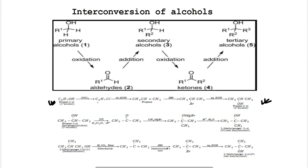Chloropropane is reacted with alcoholic KOH to form propene. Propene is then reacted with hydrobromic acid, and by Markovnikov's rule, 2-bromopropane is formed. This 2-bromopropane is again treated with aqueous KOH to form propan-2-ol. So the process for conversion of propan-1-ol to propan-2-ol is: thionyl chloride → chloropropane → alcoholic KOH → propene → HBr → 2-bromopropane → aqueous KOH → propan-2-ol.